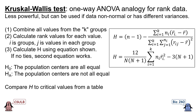First, we combine all the values from the k different groups into one large dataset but keep track of which group each value came from. Second, we calculate the ranked values for each value in this combined set. Third, we use the equation shown to calculate the value of H — if there are no ties, a simpler equation can be used. The null hypothesis of the Kruskal-Wallis test is that the population centers are all equal, whereas the alternative hypothesis is that the population centers are not all equal. We decide by comparing our calculated H value to critical values from a table or having a computer calculate the p-value.